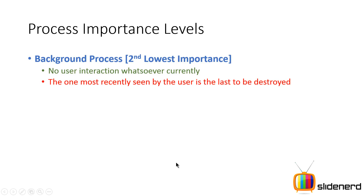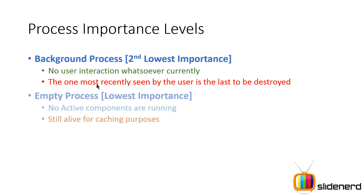The next level is the background process, where the user is not interacting with the app in any way. This is sorted in Android's task manager by which app was last seen by the user. The most recently seen app is the last to be destroyed, because the user may probably switch back to it again.